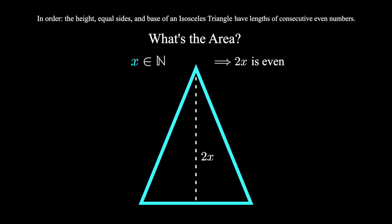If these sides are consecutive even numbers, then the two equal sides will be 2x plus 2, and the base will be 2x plus 4.